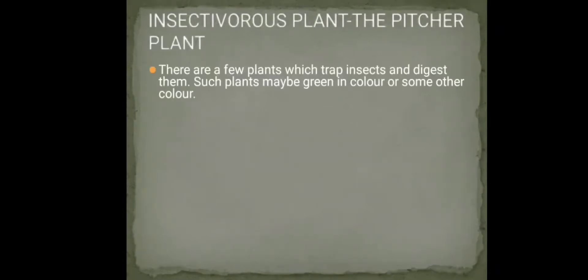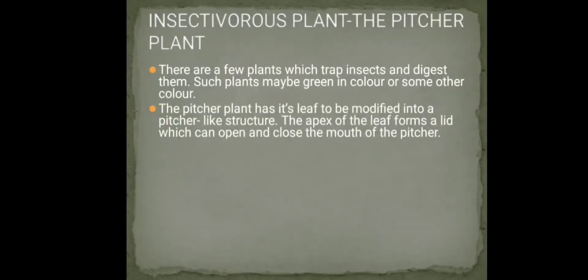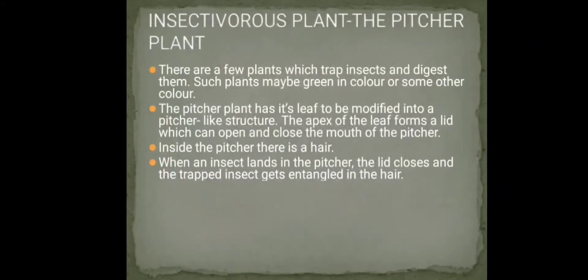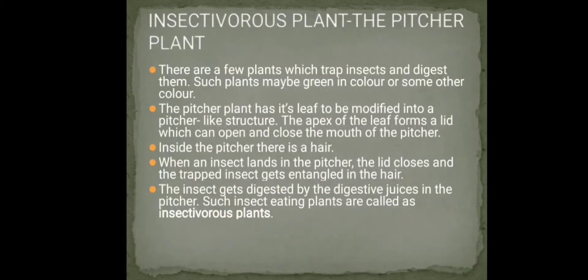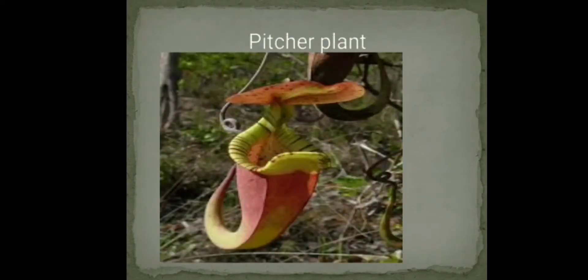Insectivorous plants trap and digest insects. The pitcher plant has its leaf modified into a pitcher-like structure. The apex of the leaf forms a lid that can open and close the mouth of the pitcher. When an insect lands inside, the lid closes, trapping the insect in the hairs inside. The insect is then digested by digestive juices. Such insect-eating plants are called insectivorous plants.